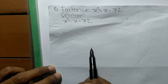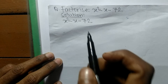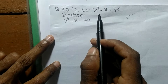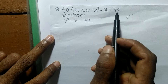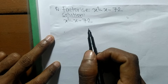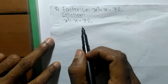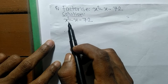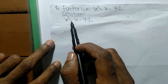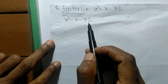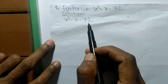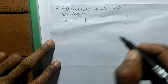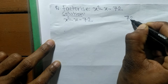Today in this video we shall learn to factorize x squared minus x minus 72. For the solution of factorization of x squared minus x minus 72, first of all we have to find out the factors of 72.